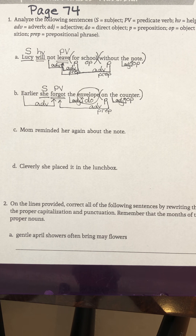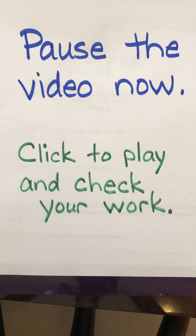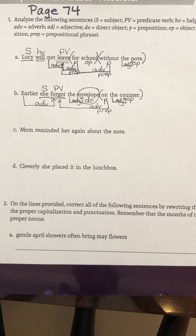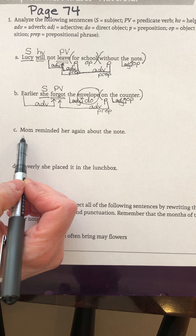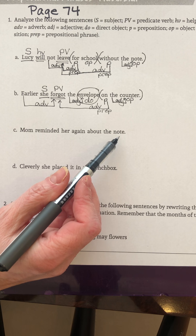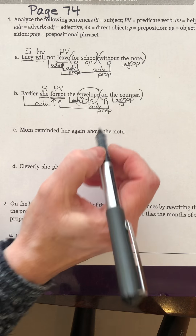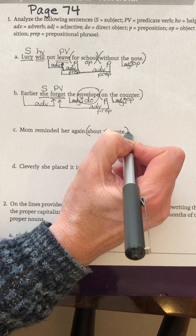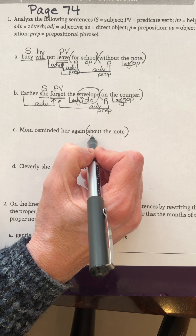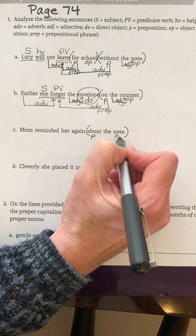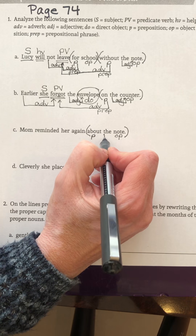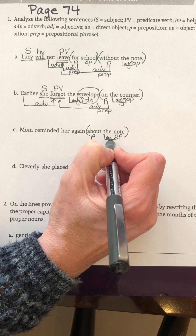And then you will go ahead and do letter C. Pause the video now. Do letter C and come back to me. Welcome back. Let's do letter C and see how much you got correct. Mom reminded her again about the note. Order of analysis is phrases, clauses, principal elements, then modifiers. Are there any prepositional phrases in this sentence? Yes ma'am. About the note is a prepositional phrase. About — preposition. About what? Note — object of the preposition. The — adjective because it modifies the noun.